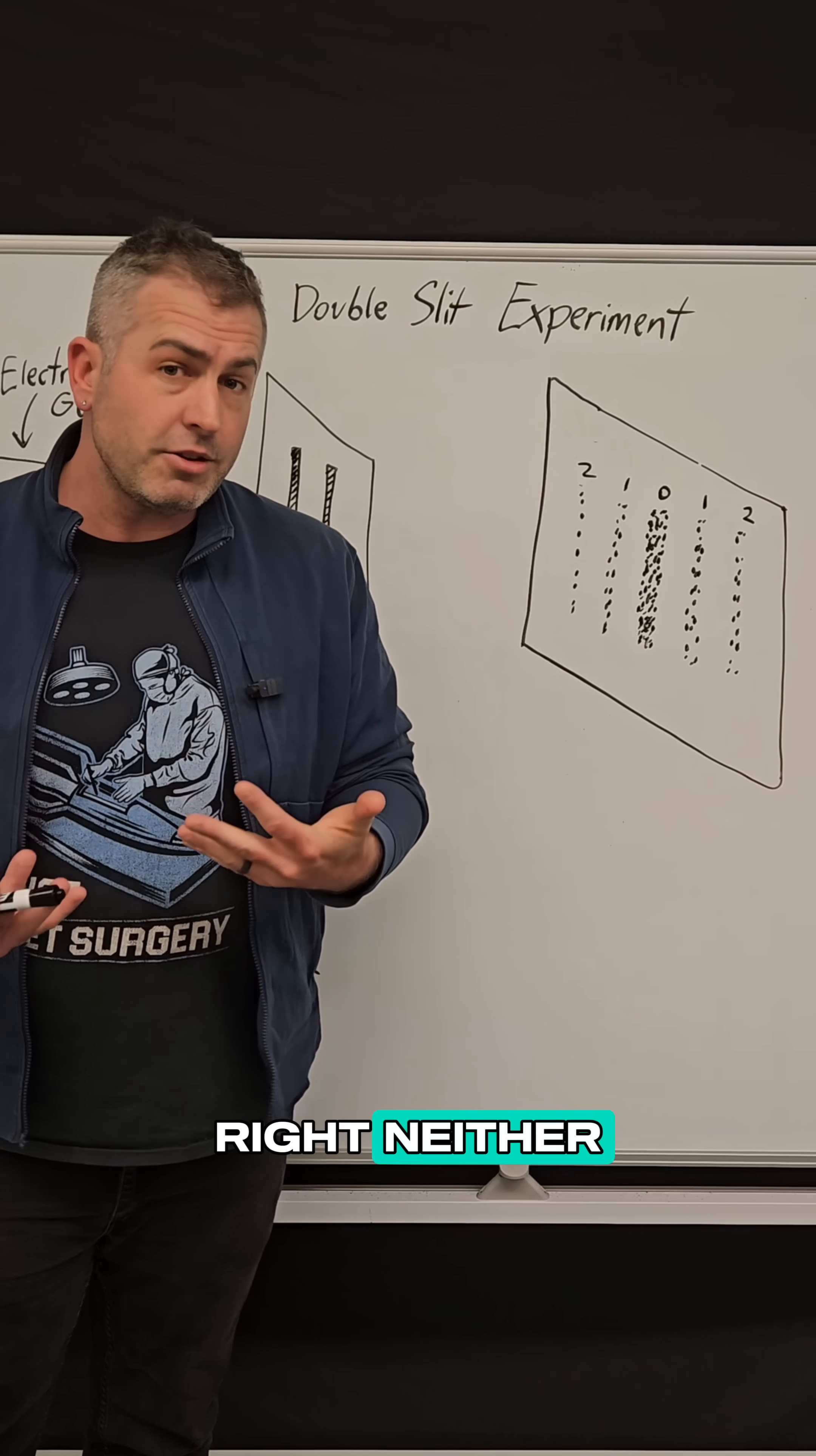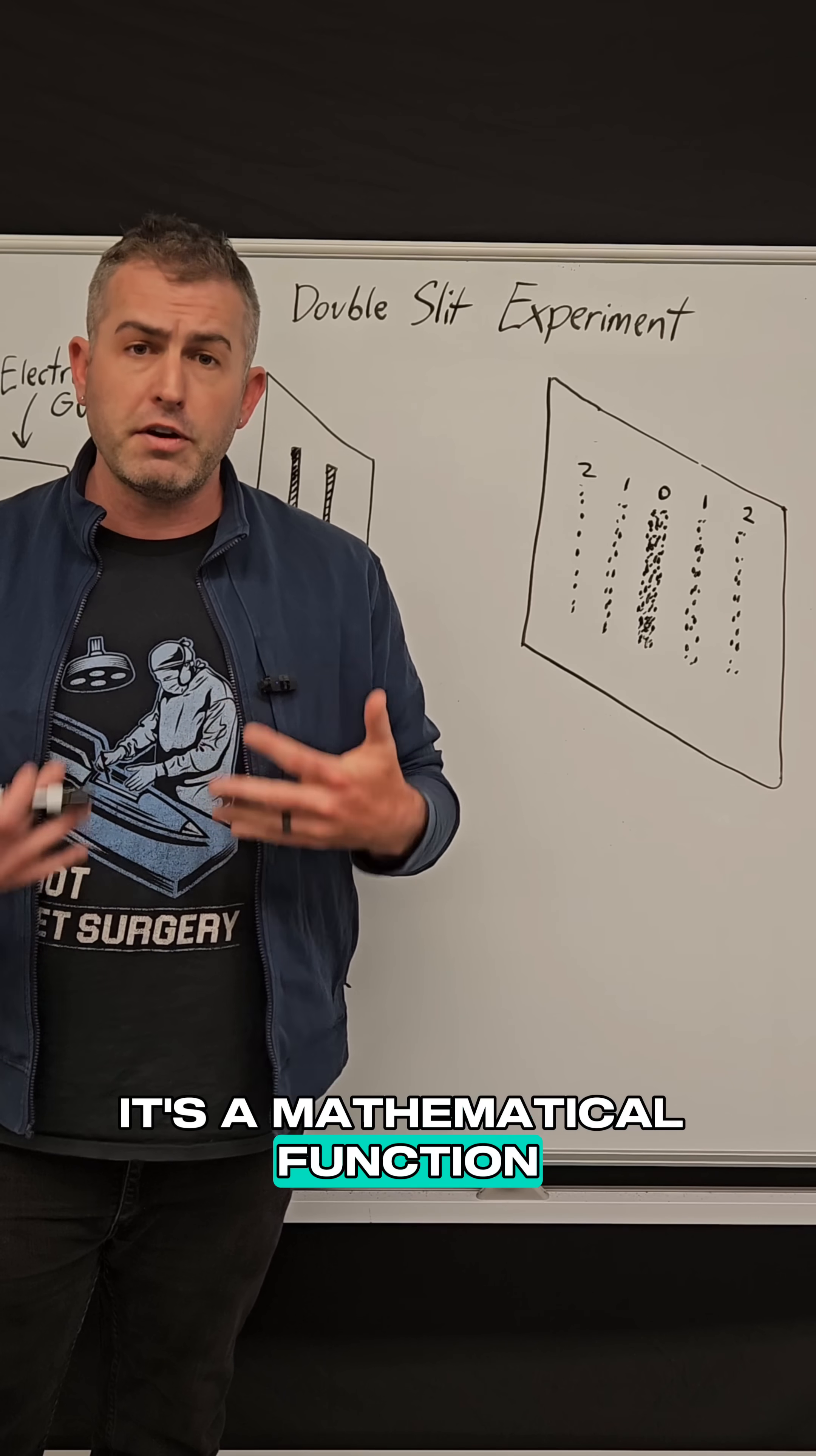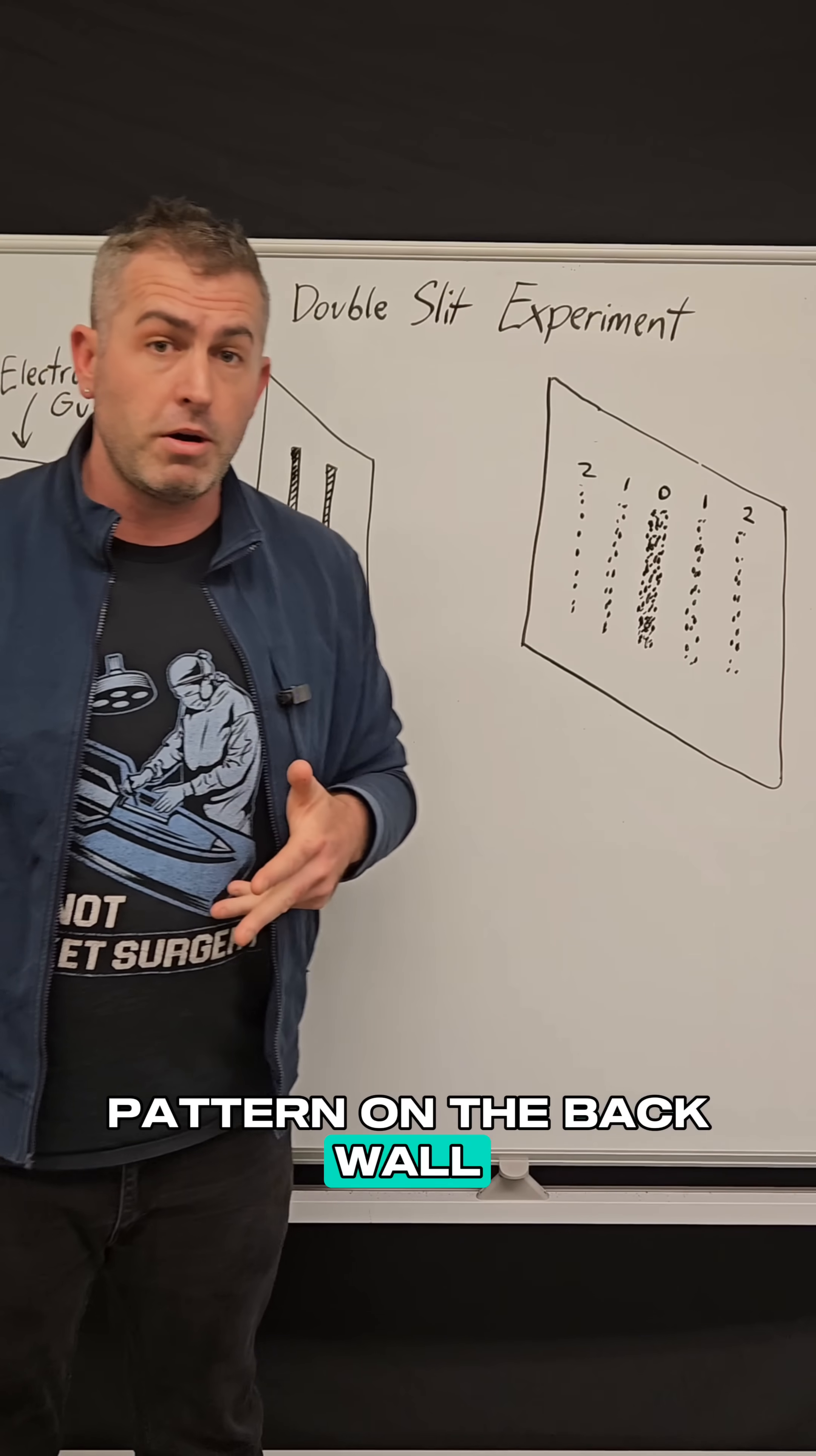left, right, neither, and both exist simultaneously in superposition with each other. And we call that a wave function. It's a mathematical function of probabilities that allow this electron to behave as a wave, and so it can pass through both slits, interfere with itself, and create this interference pattern on the back wall.